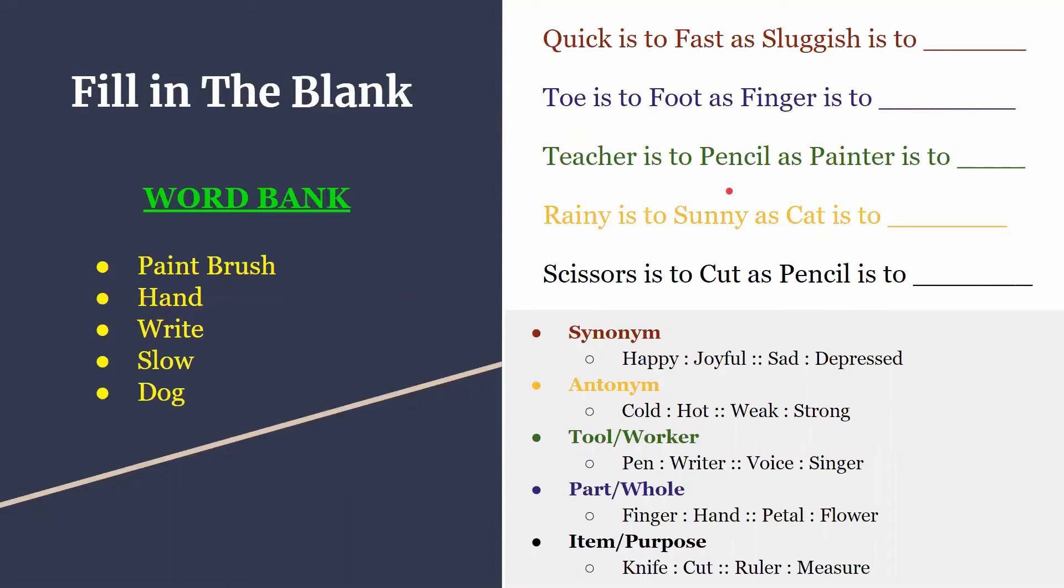Then we have scissors is to cut as pencil is to... these two are both black so we can see that's an item with a purpose. Here's the item, here's the purpose. So it'd be write, since pencils write.